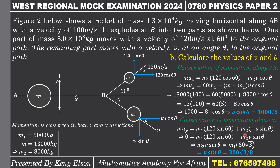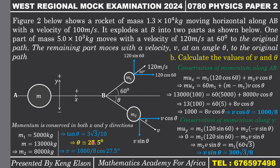Dividing Equation 2 by Equation 1: v cancels, and sin theta / cos theta = tan theta = (300√3/8) ÷ (1000/8) = 300√3/1000 = 3√3/10. Taking the inverse tangent of both sides, theta ≈ 27.5 degrees. Substituting theta back into Equation 1: v cos 27.5° = 1000/8, giving v ≈ 141.0 meters per second. If you have any questions, indicate in the comment section, and don't forget to define oblique impact. See you in the next video, stay blessed.